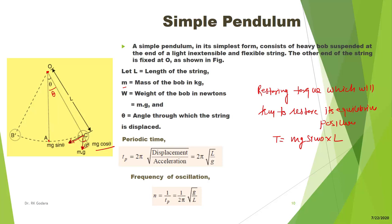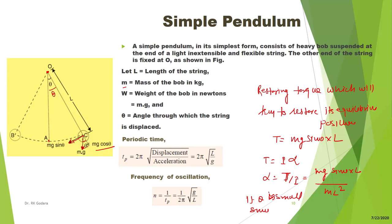The torque about the point of suspension is mg sin theta × L. Since torque equals I × alpha, alpha equals T over I. The moment of inertia of the mass about the point of suspension is mL². So alpha = mg sin theta × L / mL². For small angles, sin theta ≈ theta, giving alpha = g·theta / L.